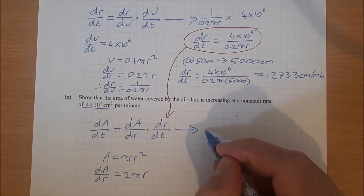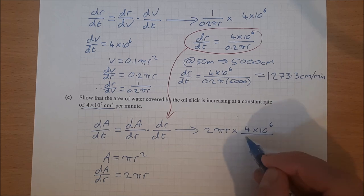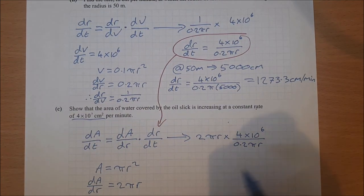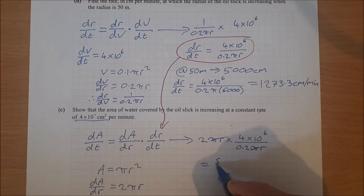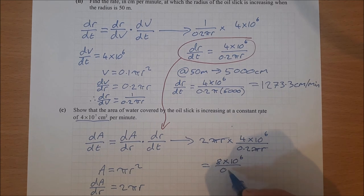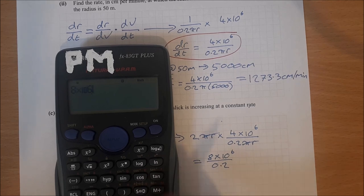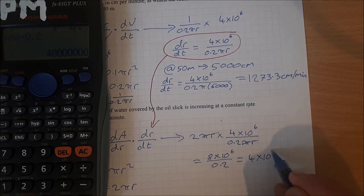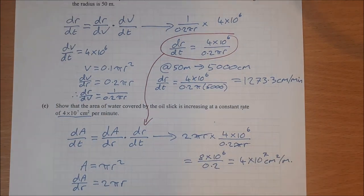Now fill both in: dA/dt = 2πr × (4×10⁶ / 0.2πr). The πr cancels with the πr, leaving 2 × 4×10⁶ = 8×10⁶, divided by 0.2. On the calculator: 8×10⁶ ÷ 0.2 = 4×10⁷. So dA/dt = 4×10⁷ square centimeters per minute — which is what we were asked to show. And it's constant because r cancelled out.